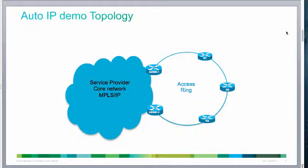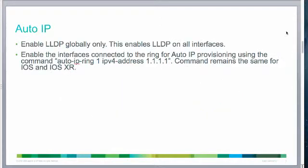I have two edge routers, ASR9K1 and ASR9K2, and I have three nodes in the ring: R1, R2, and R3. In order to enable Auto IP functionality in your network, you need to configure two things. The first one is LLDP — LLDP has to be configured globally.